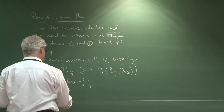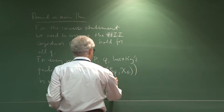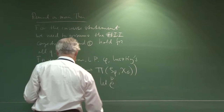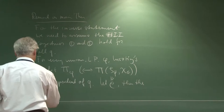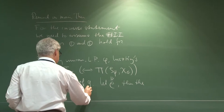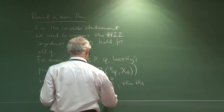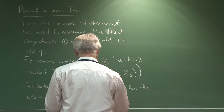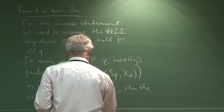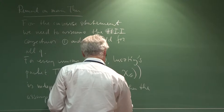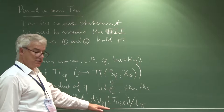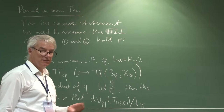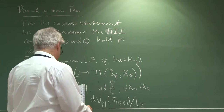Let me state this precisely. Let rho be an element in this parameterizing set. Then the assumption is that this Plancherel measure — the Plancherel density — maybe I should write it as d mu over d pi for pi phi rho — so this is an absolutely continuous measure, as we will see, with a smooth density. I am referring to this density now, described in terms of the adjoint gamma factor of a certain representation.